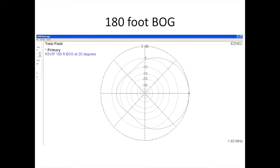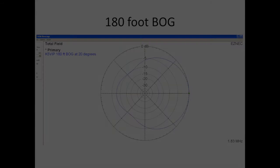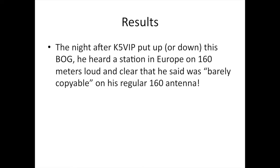Now let's take a look at a short bog. This is a 180 foot bog constructed by K5VIP. This is the plot for the elevation angle of 20 degrees. Now the night after K5VIP put up or maybe we should say put down his bog, he replied to me that he heard a station in Europe on 160 meters loud and clear that was barely copyable on his regular 160 meter antenna. So this was definitely worth doing in his case.